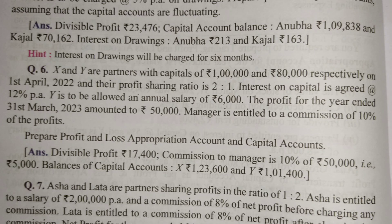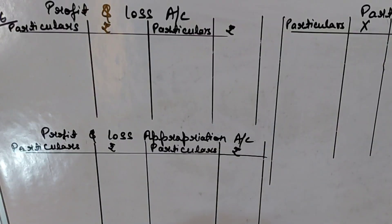Students, listen very carefully. Apart from partners' related incomes and expenses, any other incomes and expenses given — whether manager-related or employee-related — their entries we make in the Profit and Loss Account. So in the solution, we will make a Profit and Loss Account and pass the manager's commission entry there. After that, we will make the Appropriation Account. The question asks us to prepare a Profit and Loss Appropriation Account and Capital Accounts.